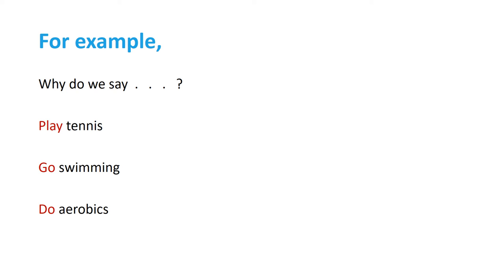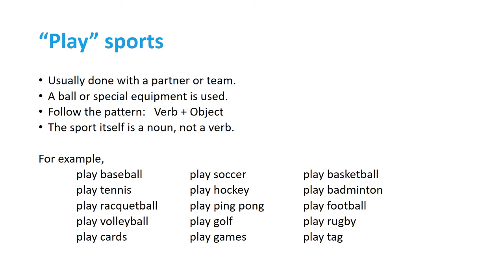For example, why do we say 'play tennis,' 'go swimming,' and 'do aerobics'? Play sports are usually done with a partner or a team, and a ball or special equipment is used. For the grammar, we follow the pattern verb plus object. Note that the sport itself is a noun, not a verb.